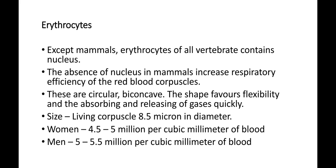Jab hum group mein dekhte hain to ye hemoglobin ke kaaran laal dikhai deti hain. Erythrocytes thin peripheral membrane, jo ki lipid protein complex ki bani hoti hai, se surrounded rehti hain. Humans mein inki life span lagbhag 120 din ka hota hai. Erythrocytes mein respiratory pigment hemoglobin paya jata hai. Hemoglobin 4% heme aur 96% globulin protein ka bana hota hai. Heme ek porphyrin derivative hota hai. Hemoglobin ke pratyek molecule mein globin ki 4 coil polypeptide chains tatha heme ke 4 molecules hote hain. Hemoglobin ke heme molecules ke iron mein oxygen ke saath ek bahut komal aur aasani se khulne wala reversible bond banane ki kshamata hoti hai.